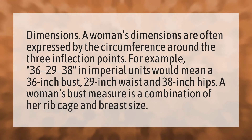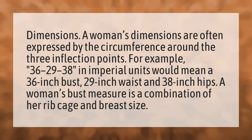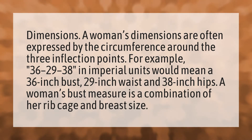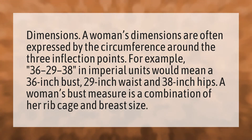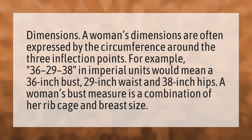36-29-38 in imperial units would mean a 36-inch bust, 29-inch waist, and 38-inch hips. A woman's bust measure is a combination of her rib cage and breast size.